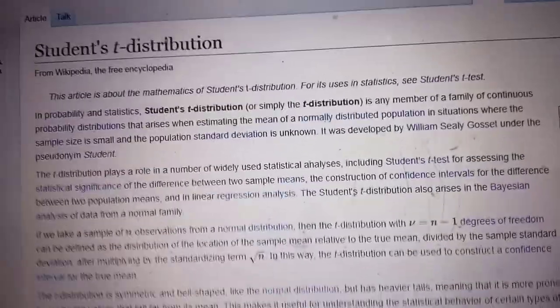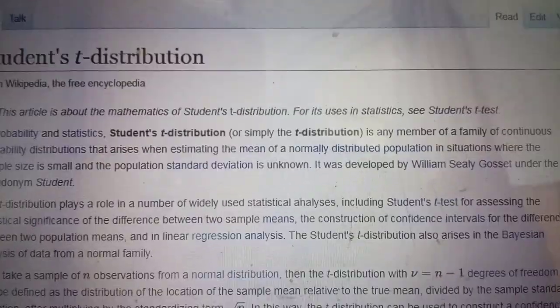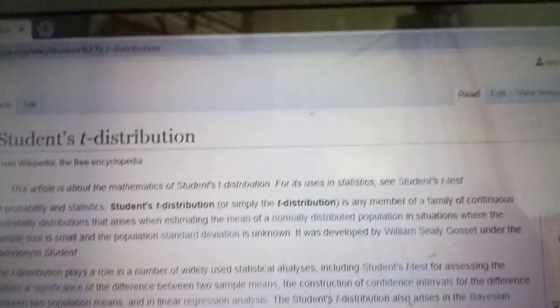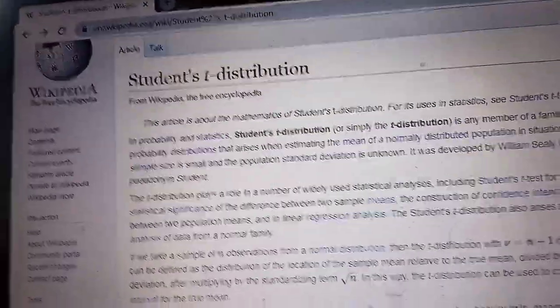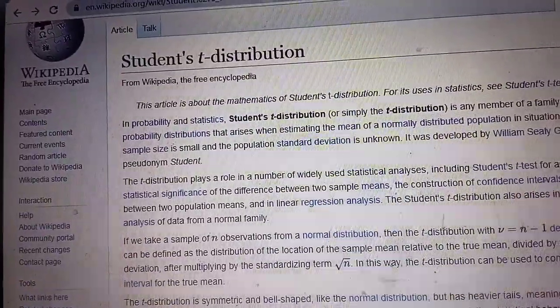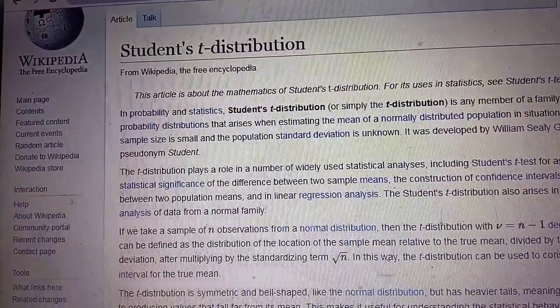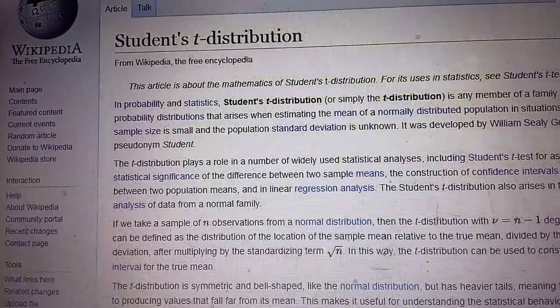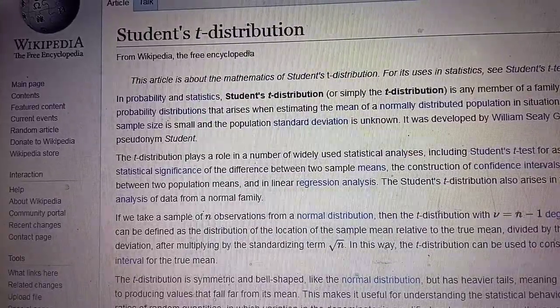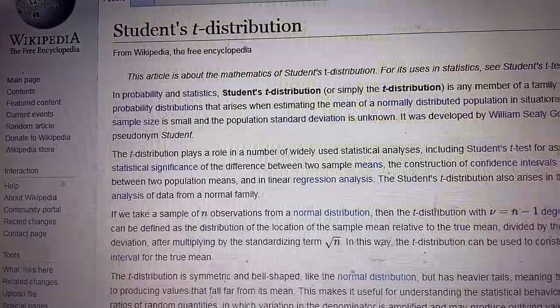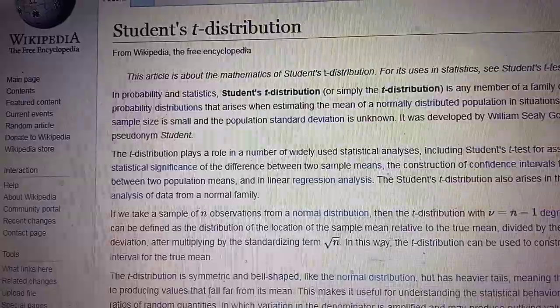I have earlier introduced in this course uniform distribution as one of the key examples of a continuous distribution. Then we have done exponential and normal. This distribution is derived as a sampling distribution of an important function of the data which we will use in testing of hypothesis regarding the mean. So it is a sampling distribution of a test statistic.